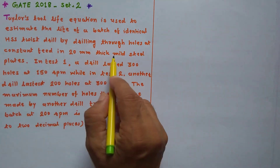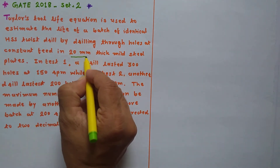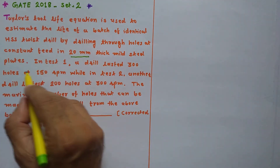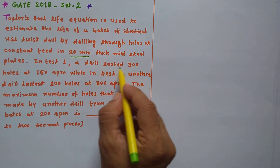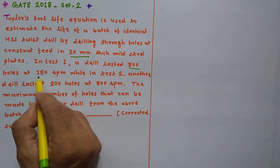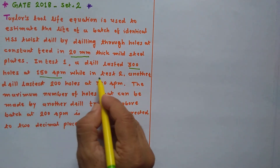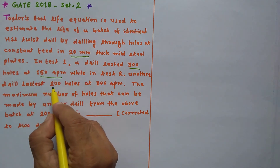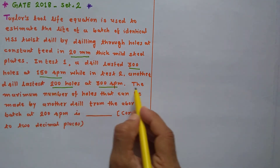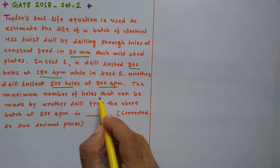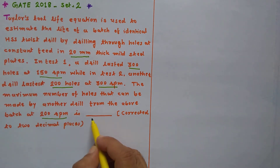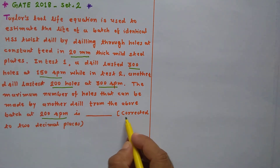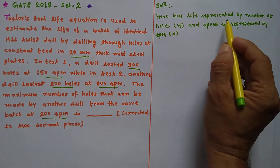In test 1, a drill lasted 300 holes at 150 rpm, while in test 2, another drill lasted 200 holes at 300 rpm. The question asks for the maximum number of holes that can be made by another drill from the above batch at 200 rpm, correct to two decimal places.